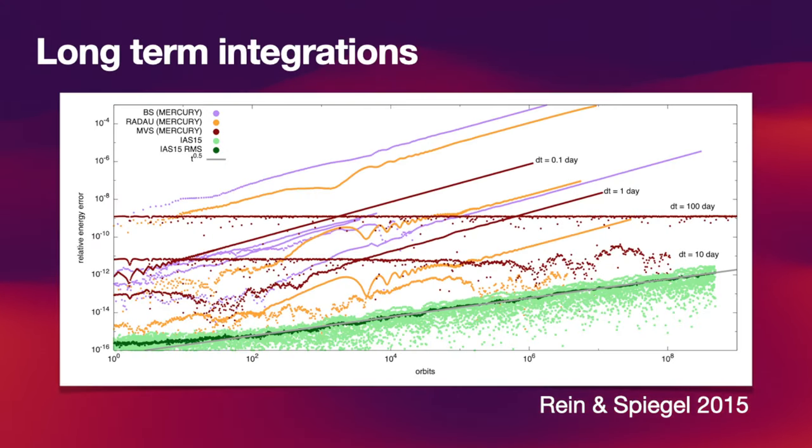The last topic I'd like to discuss are long-term integrations. We initially designed IAS15 specifically with the idea that we want to run long-term integrations with it. What you see in this plot is a relative energy error as a function of time in units of orbits. IAS15 is the lower green curve.